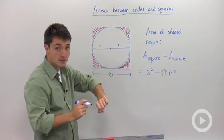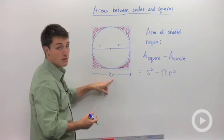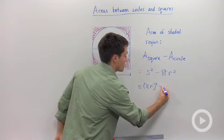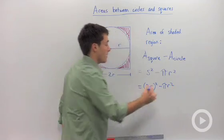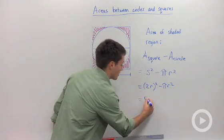So instead of writing s, which is a general term, we can write that the side of the square must be 2 radii. So we're going to have (2r)² minus πr². So 2 squared and r squared is 4r².